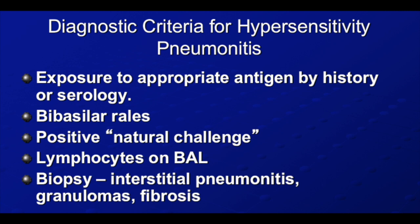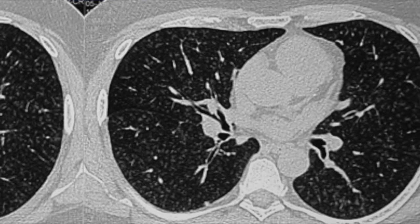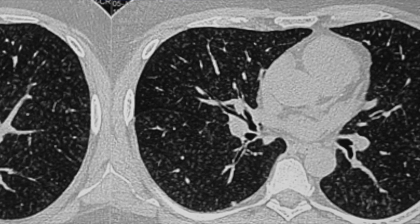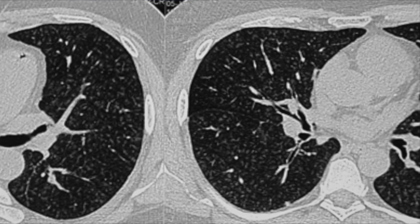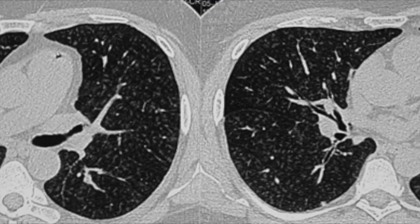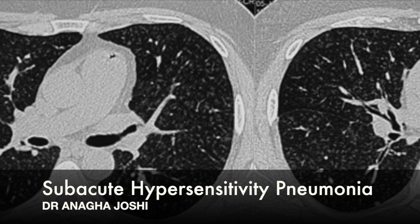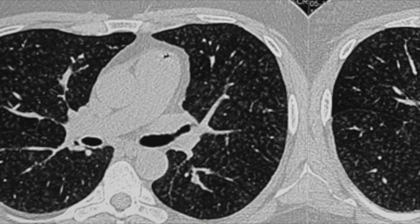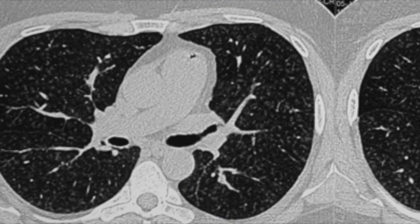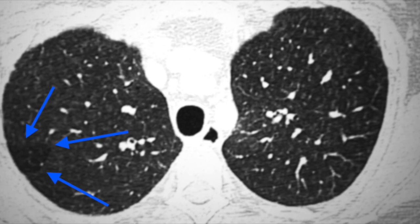If you can appreciate, these are the small ground glass density nodules scattered in bilateral lungs without any traction bronchiectasis or honeycombing. At least there are no lymph nodes. So this is most likely suggestive of subacute HP, but you need of course your pathologist or the microbiologist for serology.